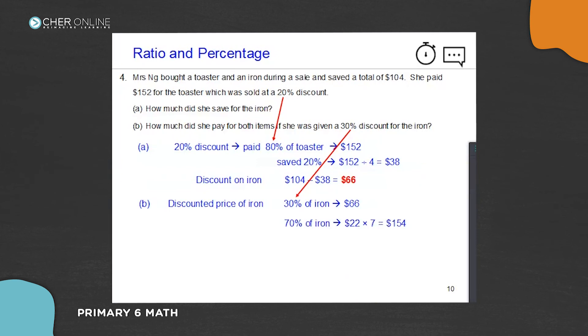We're finding 70% because if she was given 30% discount, all she needs to pay is 70%. So 22 times 7 equals $154. She paid $154 for iron and $152 for toaster.